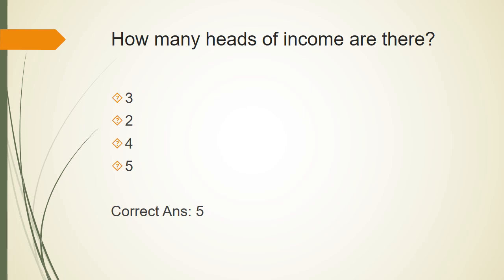How many heads of income are there? Heads of income under the Income Tax Ordinance — there are 5 heads of income. Income can be found under: income from salary, income from property, income from business, income from capital gains, and income from other sources. Moving from section 12 to section 39, the correct answer is 5.